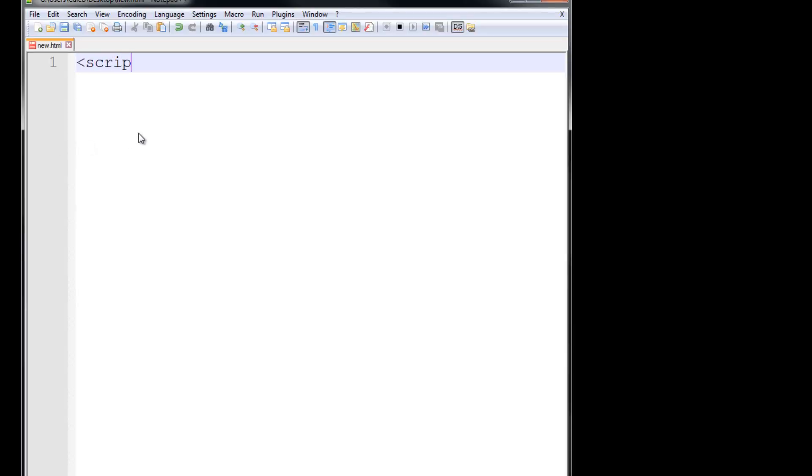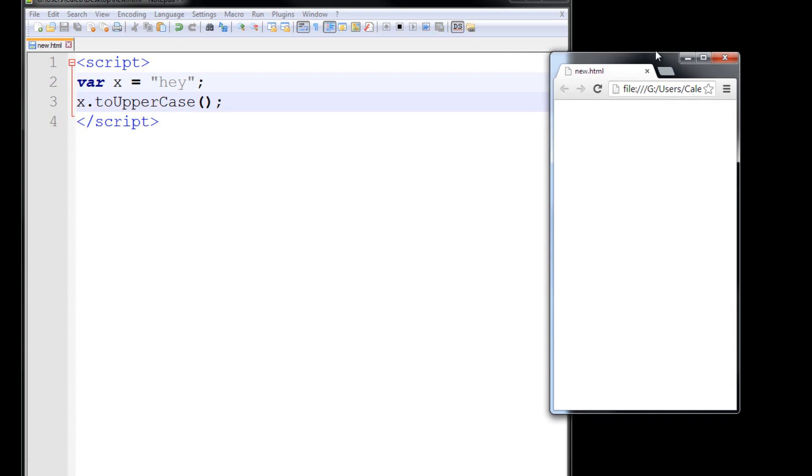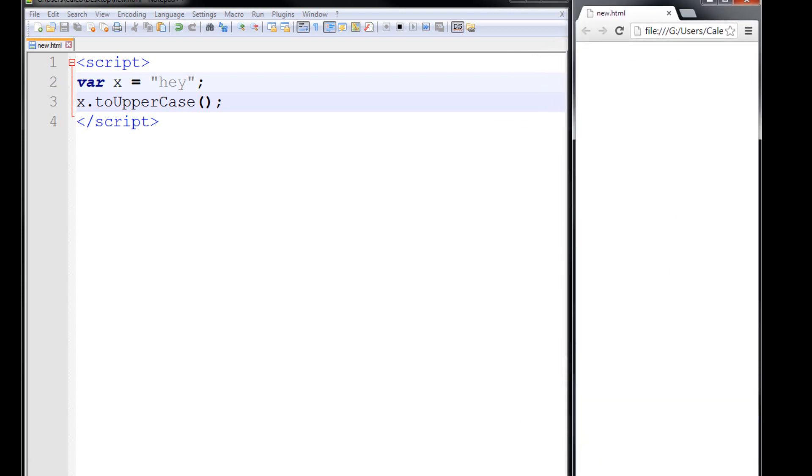So I guess I could illustrate this real quickly. new.html, and I can make a little script. So what we can do is create a variable, variable x is equal to "hey". So now I have a variable x which has the value "hey". Now we're going to call a method. Notice I use the same method every time, but there's other ones. I think it's as simple to use the same one each time. All right, so when we run this in a web browser, well it's not really going to do anything. So we can run in Chrome, and you can see no value is returned or displayed.